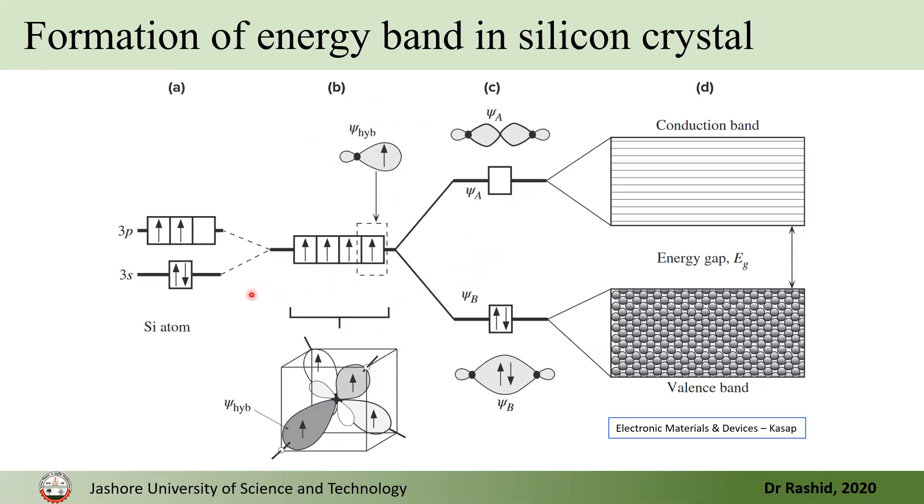Now, the same thing happens with the silicon except that it has a hybridization of 3S and 3P orbitals. And then, the hybridized orbitals, they split to form bonding and anti-bonding states in the solid.